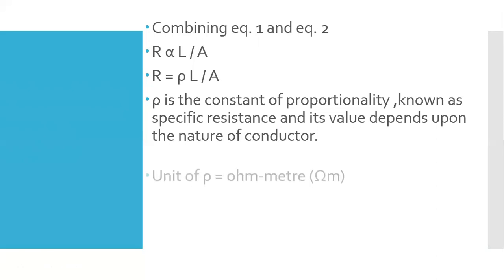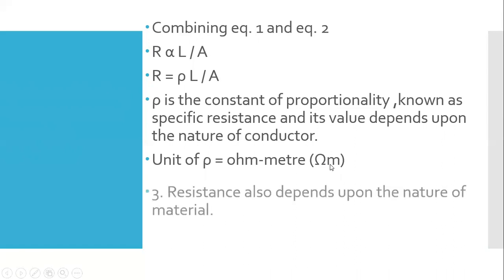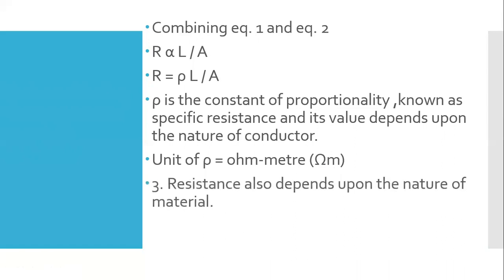The unit of ρ is ohm·meter. The third factor affecting resistance is the nature of the material. So in summary: R is directly proportional to L, R is inversely proportional to area of cross-section, and the third factor is the nature of the material.